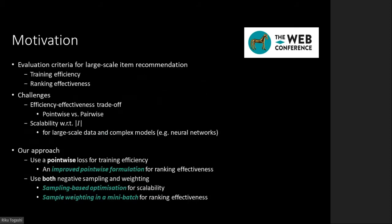Our motivation in this study is to achieve practical performance in terms of both training efficiency and ranking effectiveness. The main challenge is the trade-off between efficiency and effectiveness. The second challenge is scalability with respect to the number of items in a dataset. The crux of our approach is to use a pointwise loss function for training efficiency while improving the formulation by considering ranking effectiveness. To achieve scalability, we adopt a sampling-based optimization strategy but introduce sample weighting in a mini-batch for further effectiveness.